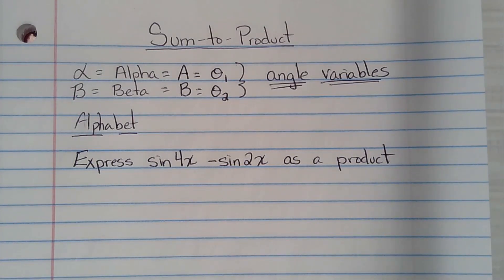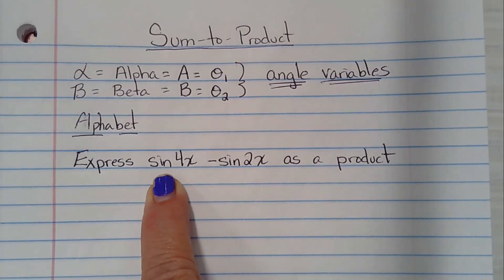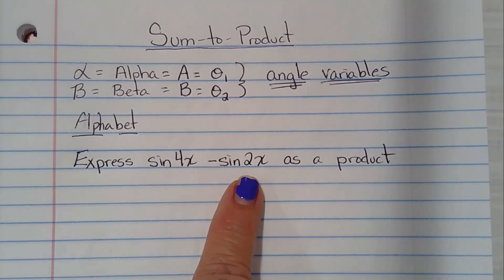So what we have right now is a sum. I mean, when I look at it, I say, well, that's a difference because it has subtraction. But adding and subtracting are relating, a difference is just a negative addition problem. And we want to change it to a product. So that's why we're going to look on the bottom of our sheet. You're going to find the one that has a sine minus another sine.